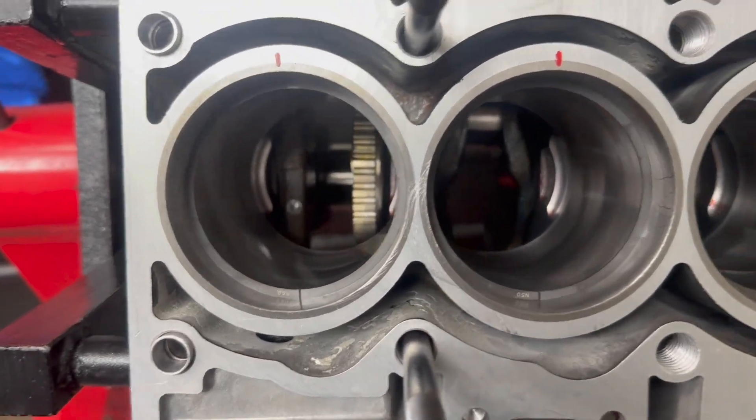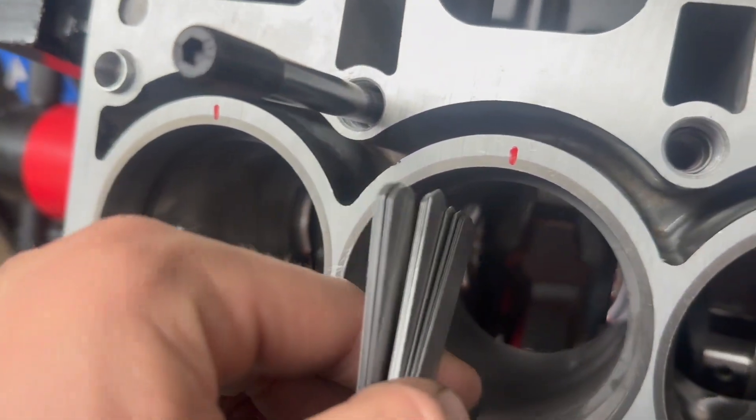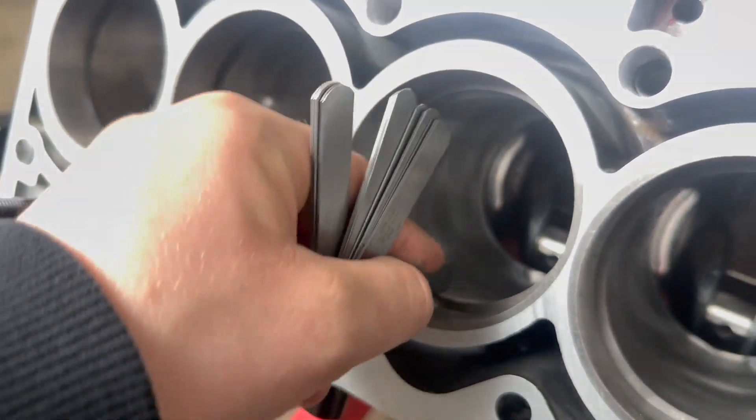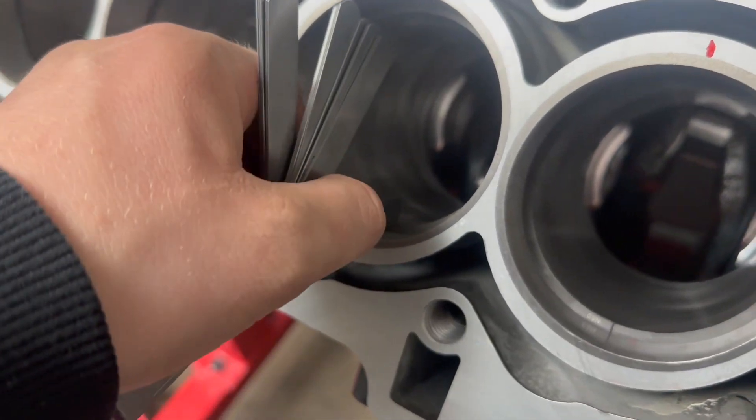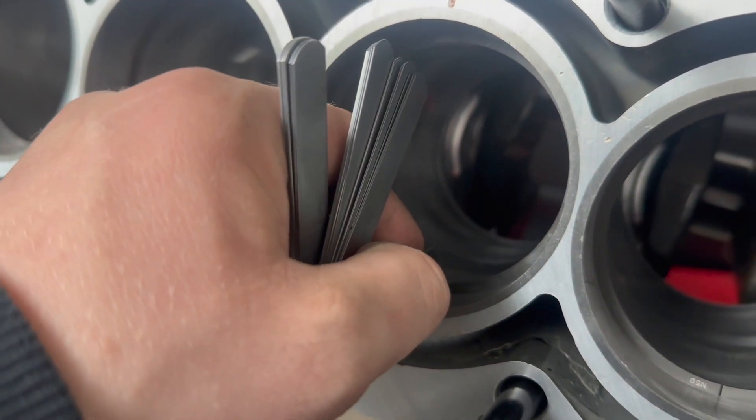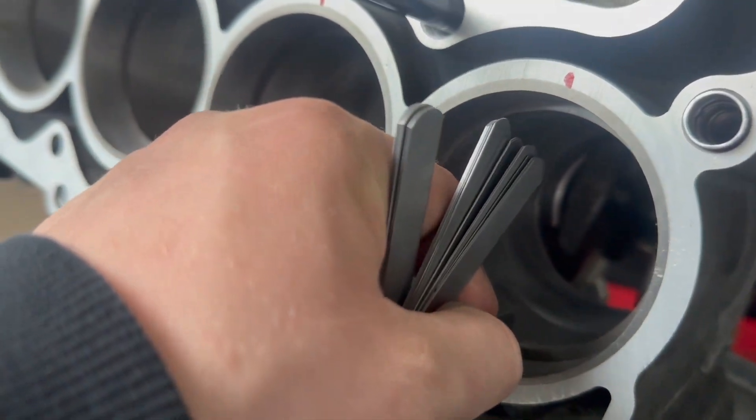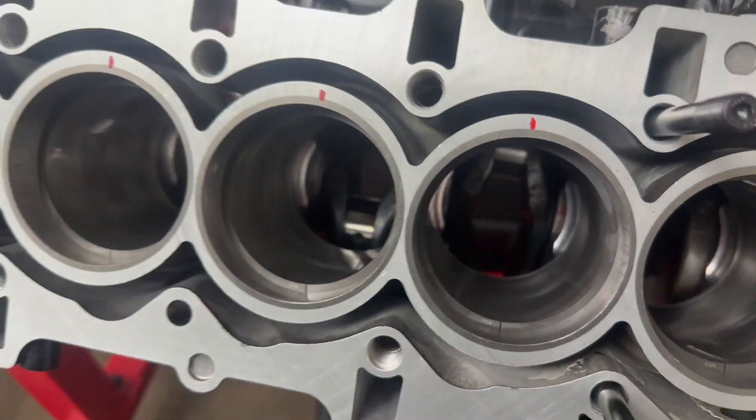I got all the scraper rings ground up now. All of them are at exactly 25 thousandths. It's a little tighter, but it's still there. That spec gives you a little bit of wiggle room, but I want them all to be as close as possible. So all of those are now done, and now I'm just going to keep track of where they came out.